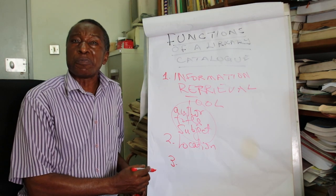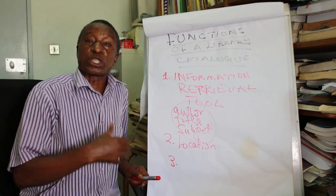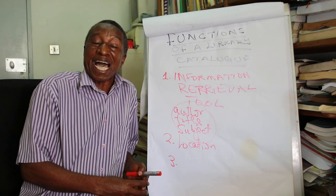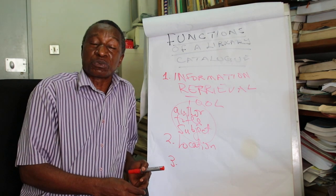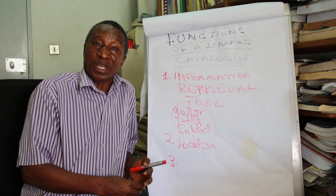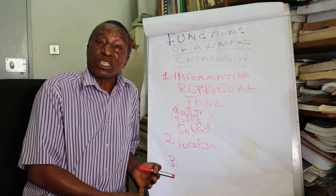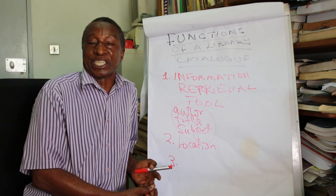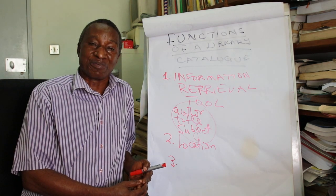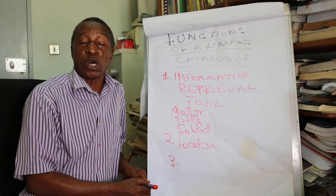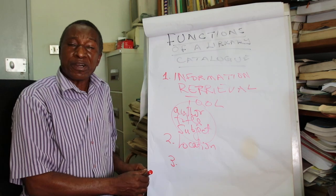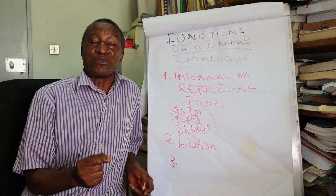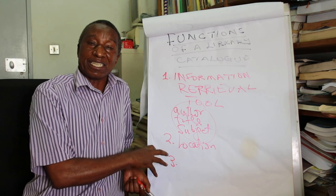The third function is that the catalog helps library users with the choice of materials. For example, users can decide whether they want the electronic version of a material or a hard copy, or a particular edition. So the catalog helps in the choice of materials.